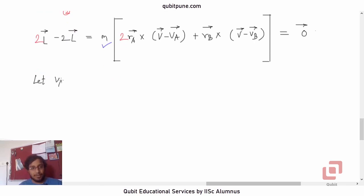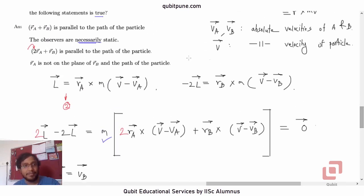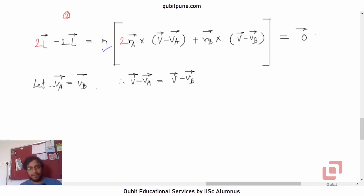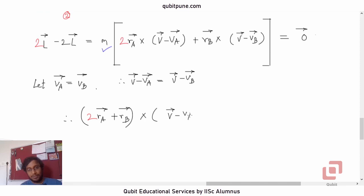Now let V̄_A = V̄_B. We are saying the observers move at the same velocity relative to some frame of reference, but that doesn't make them necessarily static. Therefore, V̄ − V̄_A equals V̄ − V̄_B, so we can factor using properties of the cross product to get: (2R̄_A + R̄_B) × (V̄ − V̄_A) = null vector.